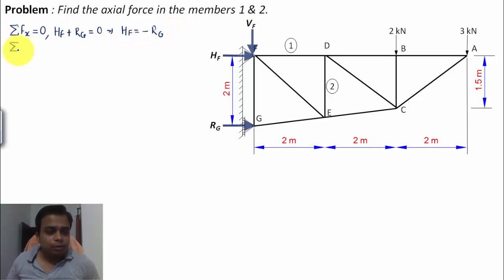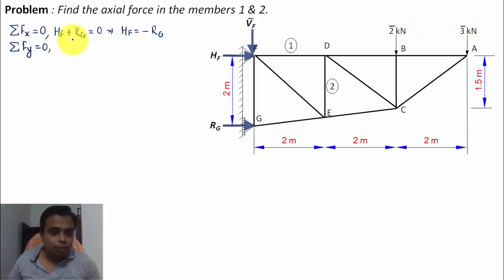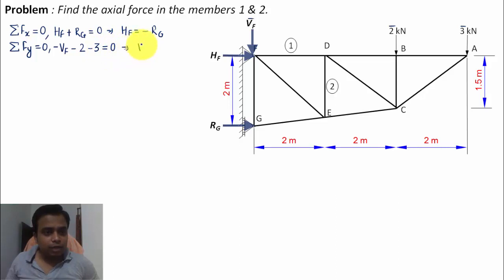Secondly, we'll be using the equation: summation of all the forces in the y direction is equal to 0. The three forces are VF, 2 kilonewtons, and 3 kilonewtons — all headed downwards, hence negative. So minus VF minus 2 minus 3 equals 0, which gives VF is equal to negative 5 kilonewtons. So we've got the value of the vertical force at point F.